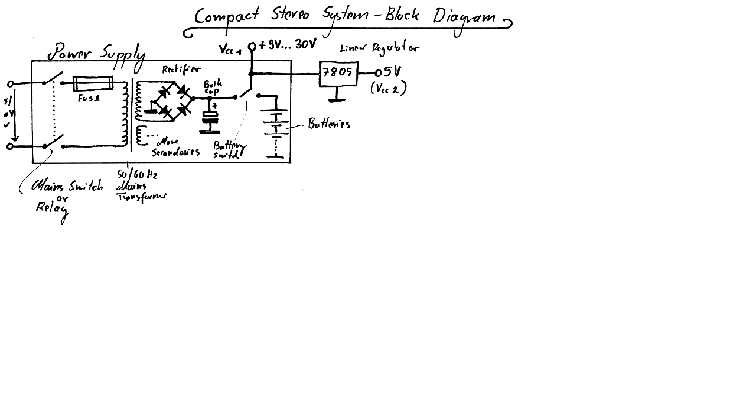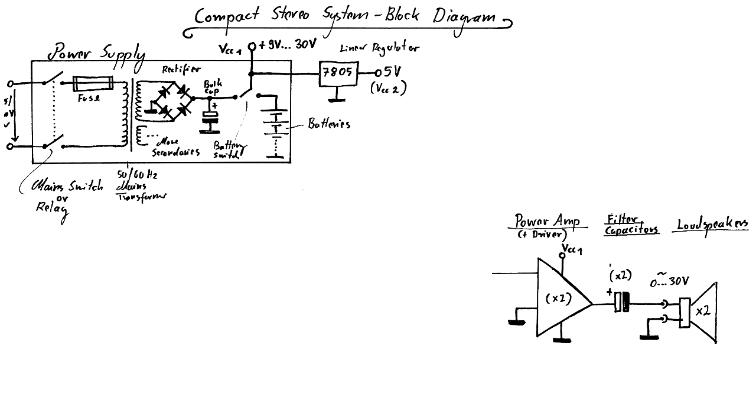So much about the power supply. Let's talk about the actual audio electronics then. These compact systems will have loudspeakers either internally or externally. At least if they are really stereo devices, you will have at least two of them. Connecting the loudspeakers to the power amplifier, you often find large electrolytic capacitors that act as filter capacitors, but sometimes you don't have them. It depends on the type and topology of the power amplifier.